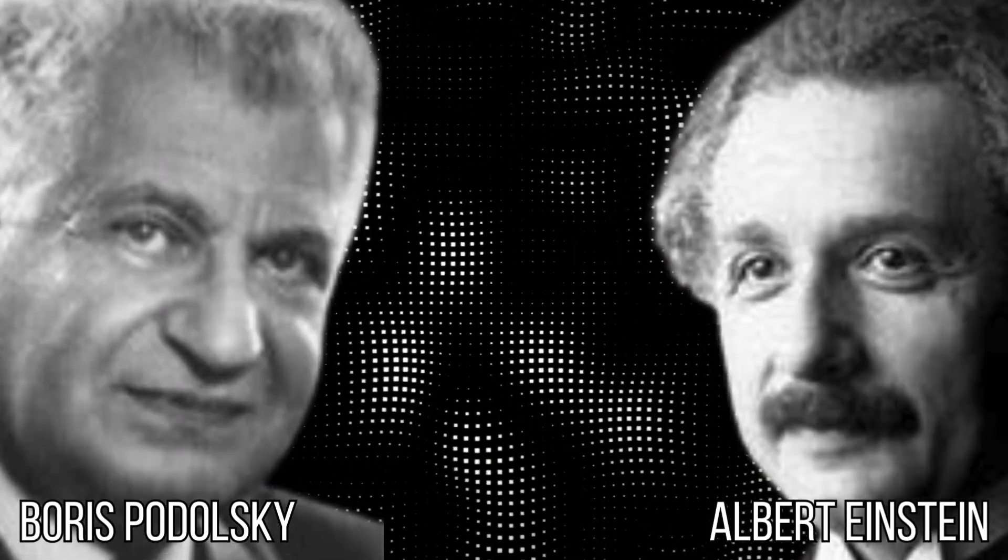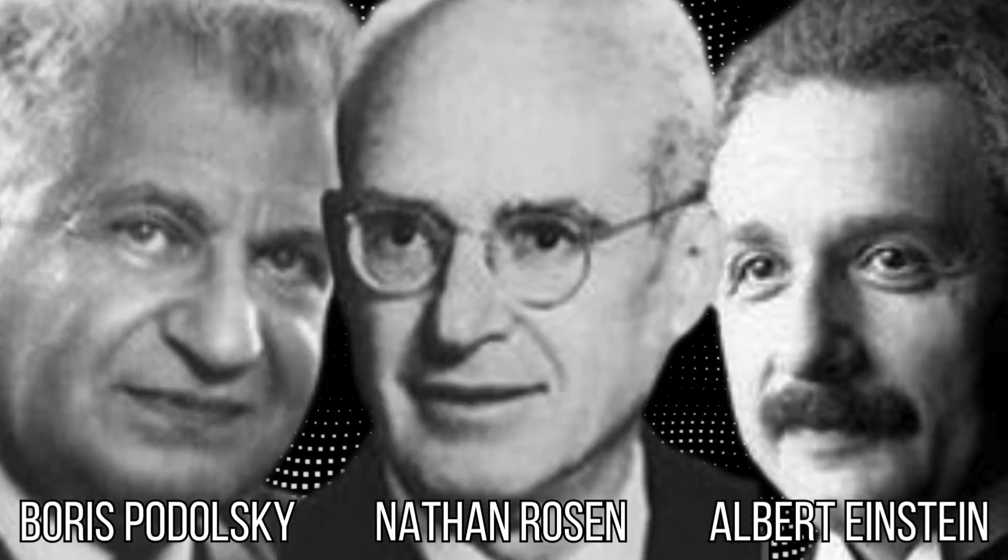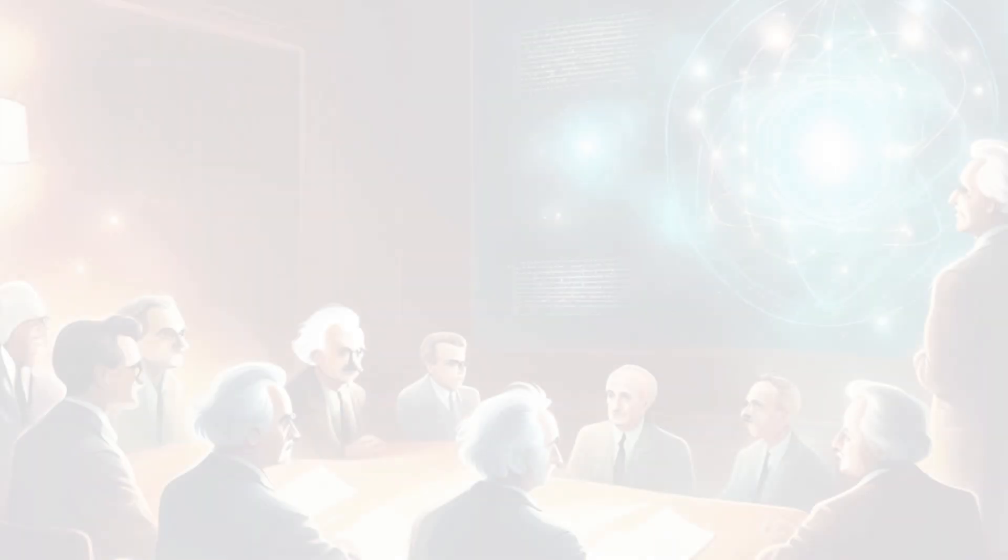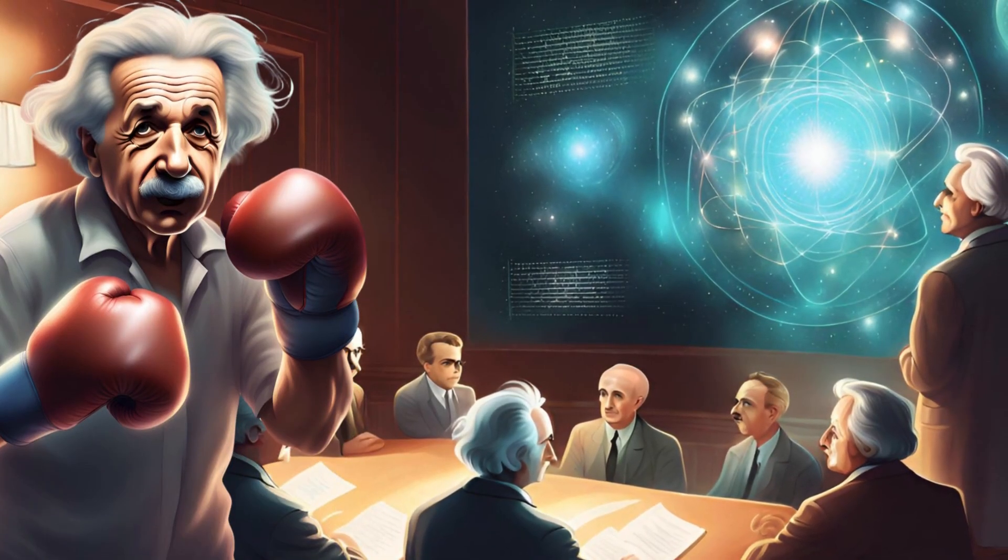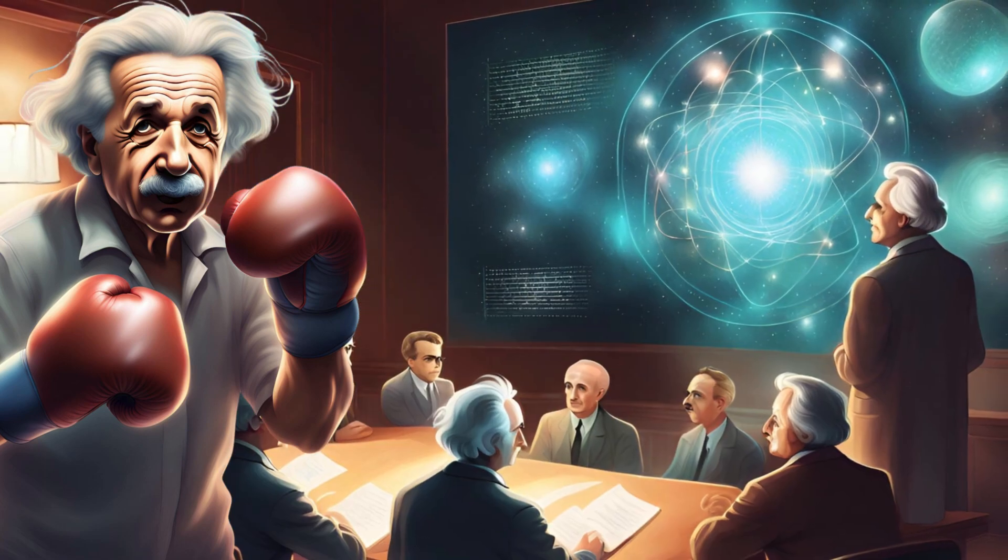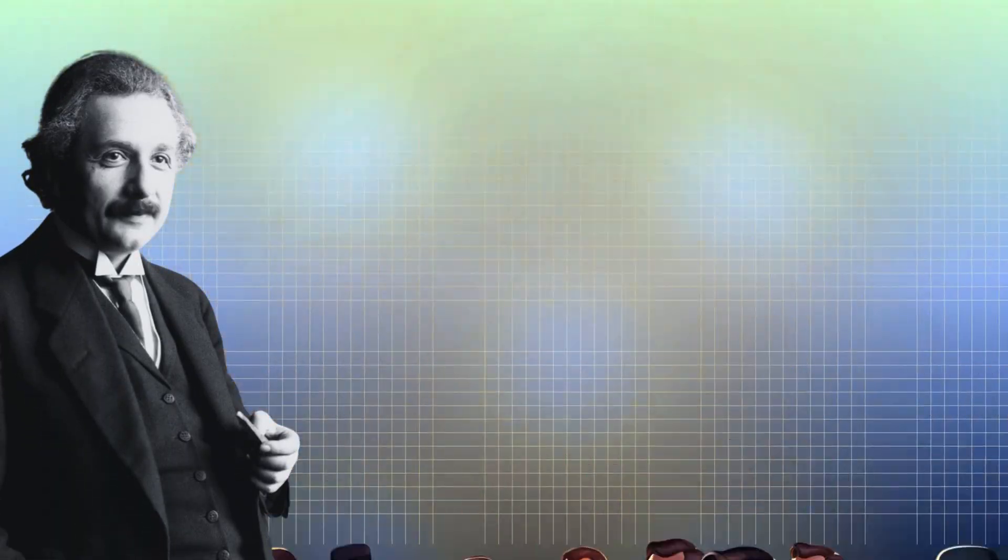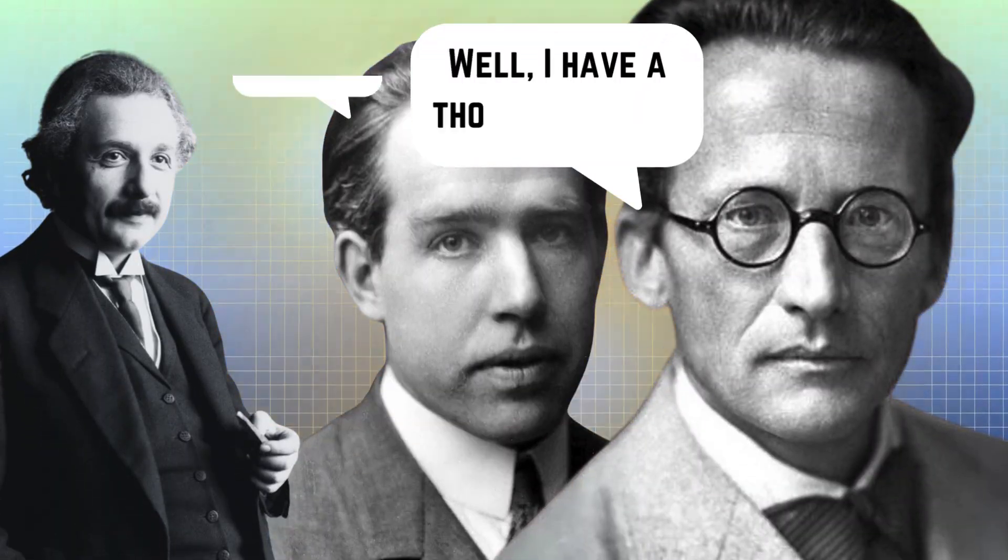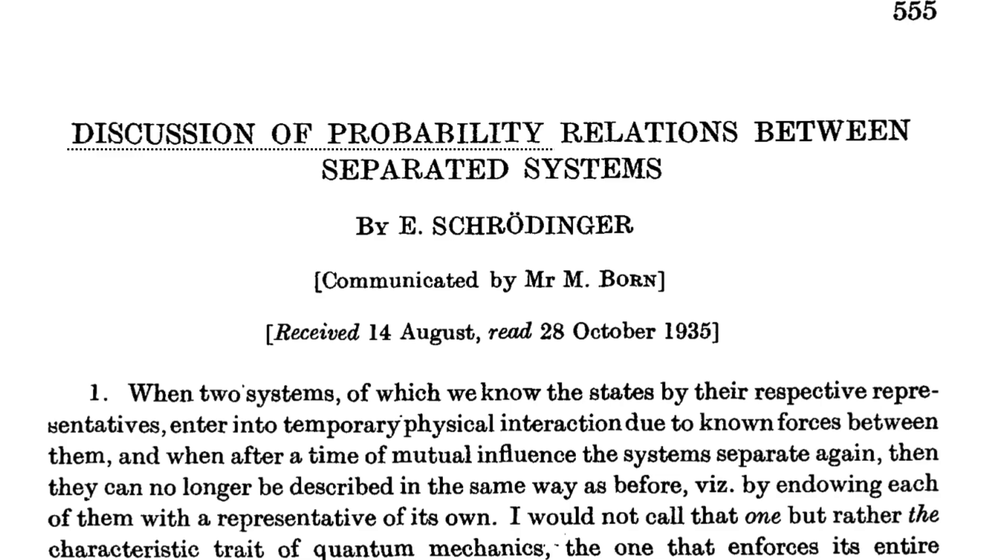This is what Einstein, Podolsky, and Rosen had to say about quantum mechanics. Well, Einstein was certain to get back an answer, a feedback, from the community that supports the quantum field theory. After his paper was published, his paper got a ton of attention and certainly did Sir Erwin Schrödinger's attention too. This prompted Erwin Schrödinger to write an article on discussion of probability relations between separated systems in 1935.